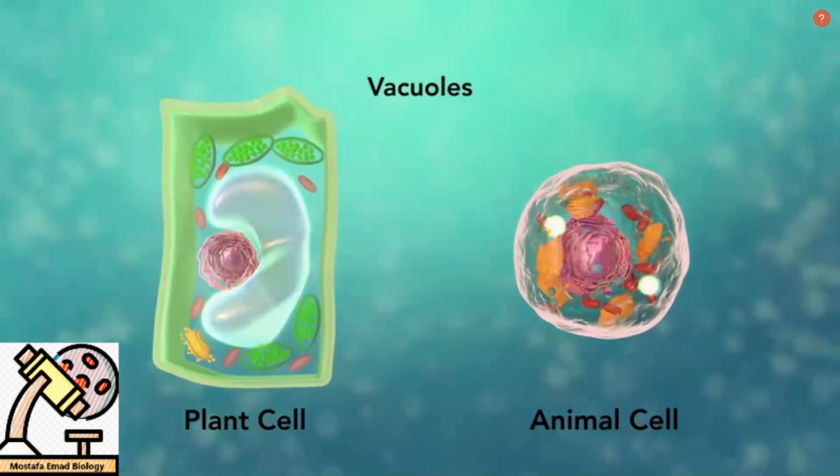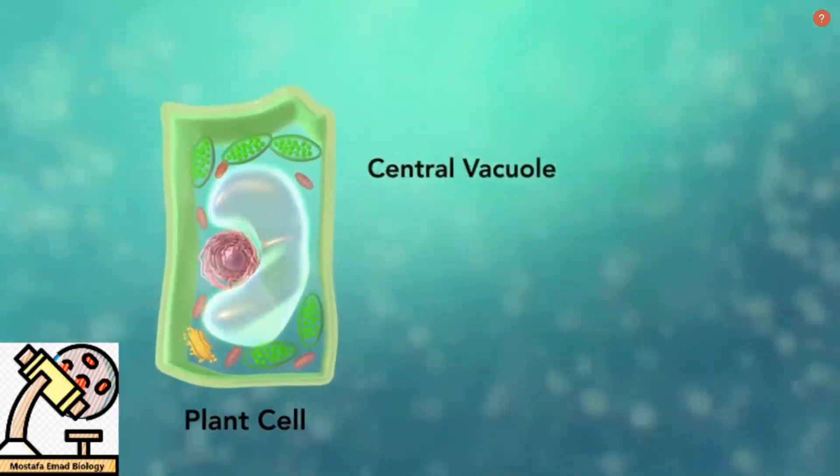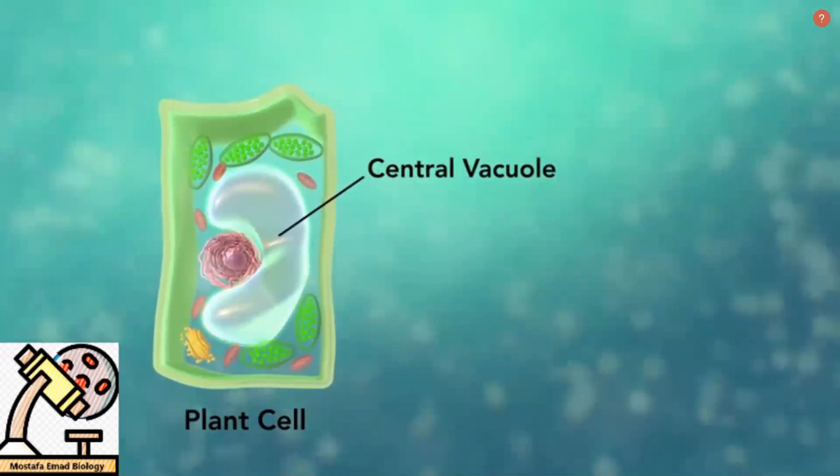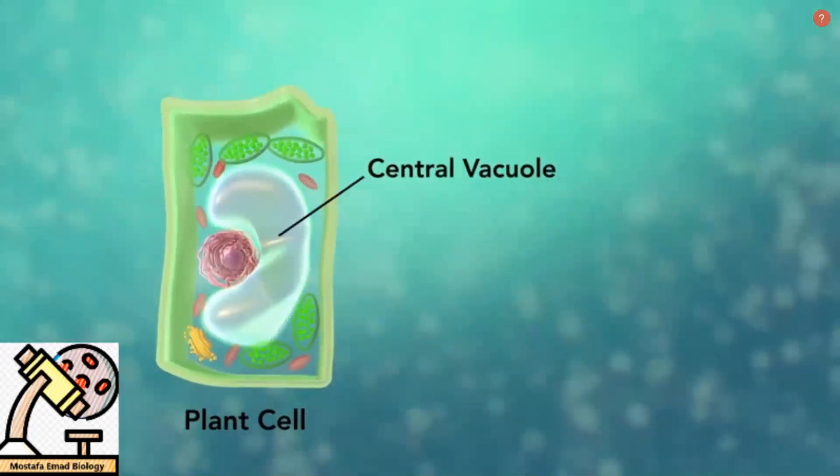Vacuoles are sac-like structures that store different materials. Here, in this plant cell, the central vacuole stores water.